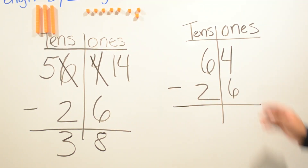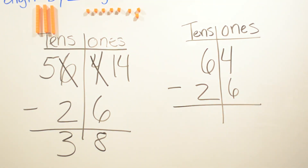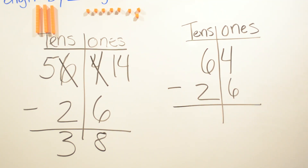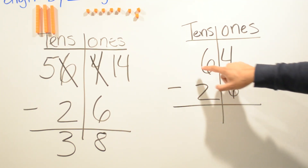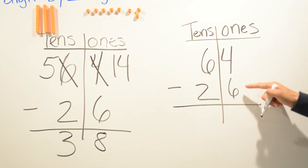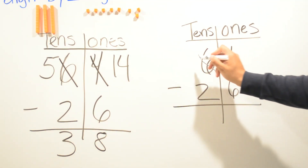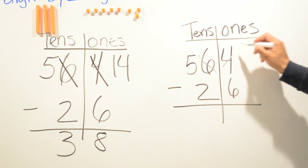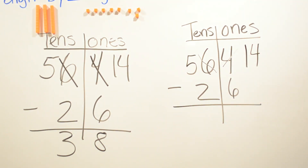Another way to solve 64 minus 26 is by not using any manipulatives but using helping hands. We still use 'more on the floor, go next door and get ten more.' So we're gonna borrow from the six — this six becomes a five, and this four becomes a fourteen.